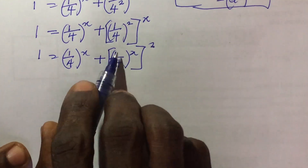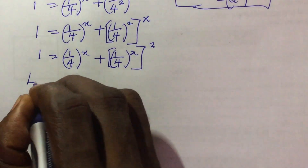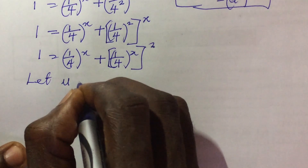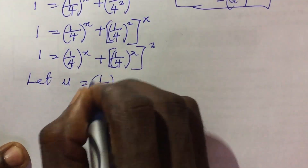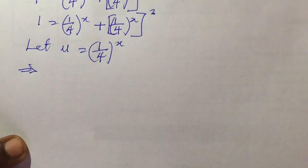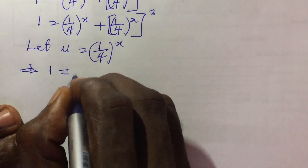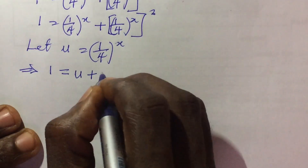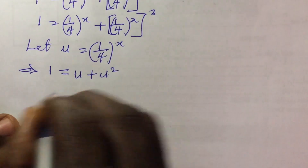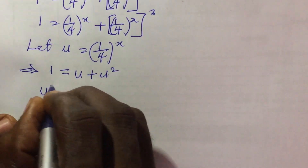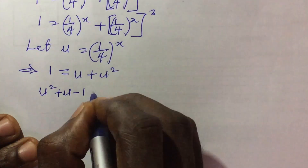At this point we bring in another variable. We allow 1 all over 4 to the power of x to be a new variable, because what we have in both terms is the same. So we say: let u equal to 1 all over 4, all to the power of x. This now implies 1 equal to u plus u squared.